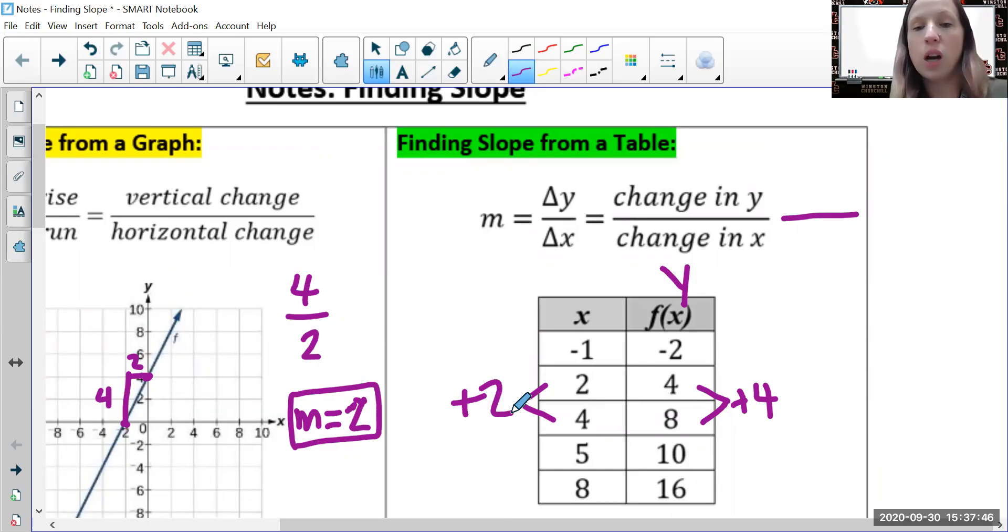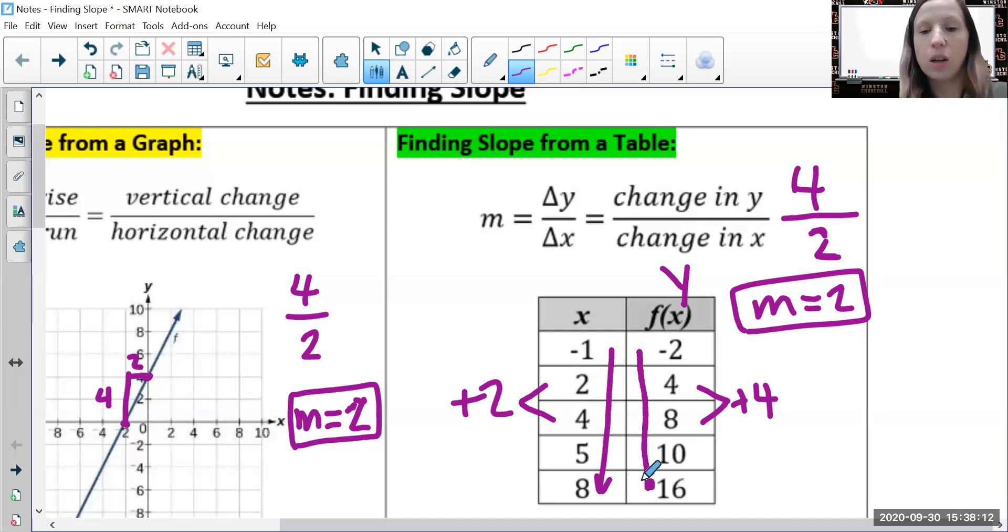The change in y's goes on top - that's four - and the x's are changing by positive two. Four divided by two is two, so our slope is two, a positive slope. You can tell because the x's are getting bigger and the y's are also getting bigger: 4, 8, 10, 16. If both columns' numbers are getting bigger, it's a positive slope.